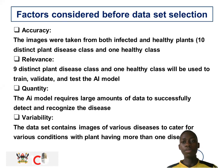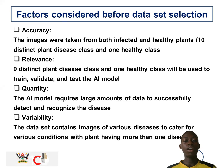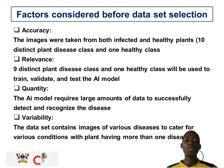The factors considered when selecting the dataset are accuracy — this was done by collecting images of various tomato plant leaves — and the second factor is relevance. For relevance, we decided to collect nine distinct plant diseases and one healthy class, which will be used to train, validate, and test the AI model.